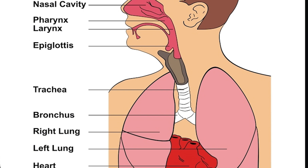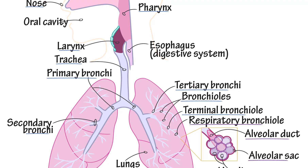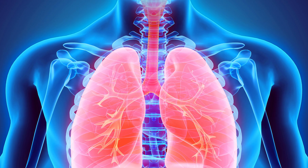The segmental bronchi can be grouped together as subsegmental bronchi. The alveoli are the dead end terminals of the tree, meaning that any air that enters them has to exit via the same route. A system such as this creates dead space, a volume of air of about 150 milliliters in the adult human, that fills the airways after exhalation and is breathed back into the alveoli before environmental air reaches them. At the end of inhalation the airways are filled with environmental air, which is exhaled without coming in contact with the gas exchanger.